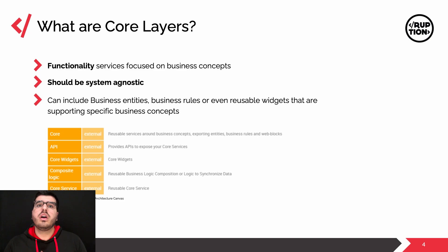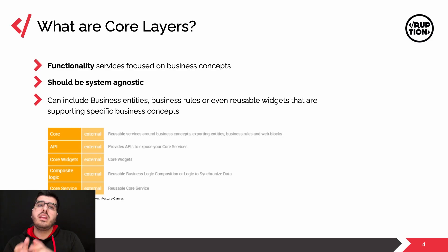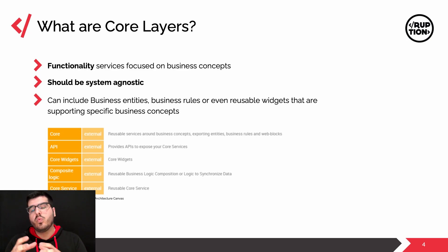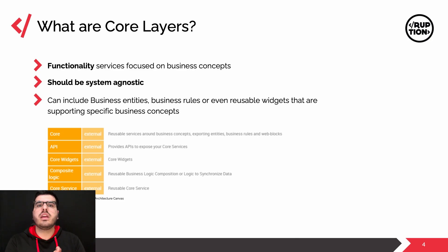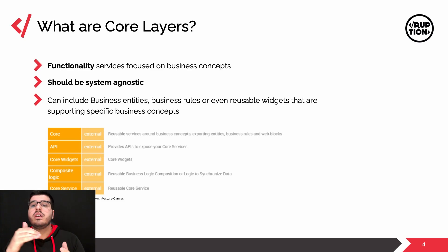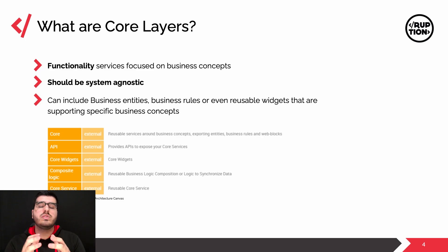The core consists of reusable services built around business concepts or existing entities, business rules, and web blocks. The API provides APIs to expose our core services to upper layers. Core widgets, as the name indicates, are widgets that are the core of our applications. Composite logic can be reusable business logic composition or logic to synchronize data — this is where our asynchronous processes fit. And core services are reusable core services.